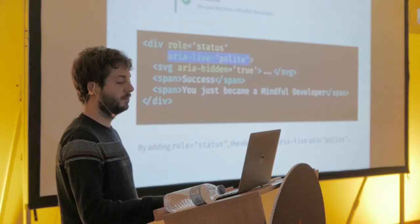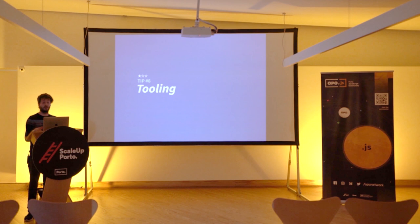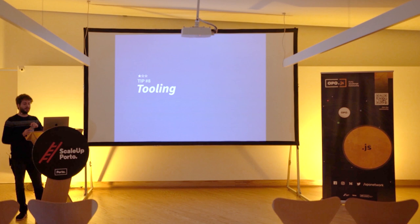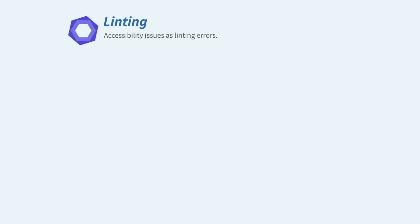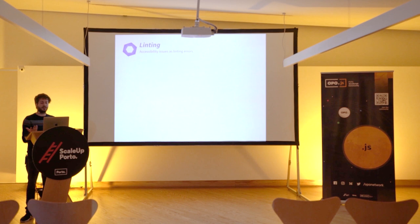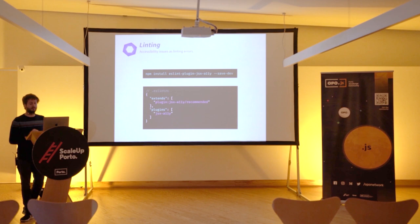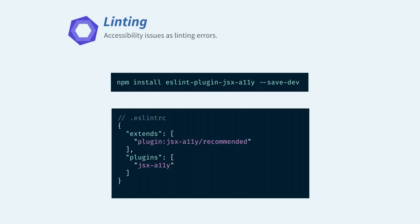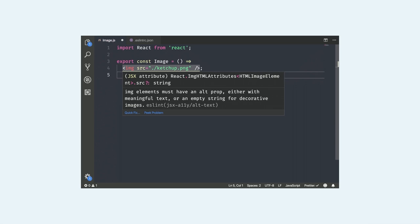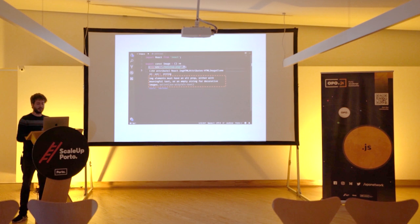Tip eight: tooling and automated tests. The easiest option is linting. There's an ESLint plugin for JSX that you can install via NPM and add to your config. With your editor correctly configured, as you write code — for example using an `img` tag without an `alt` — you'll immediately see a warning: 'Image elements must have an alt prop, either with meaningful text or an empty string for decorative images.' It's useful because no one remembers everything all the time.